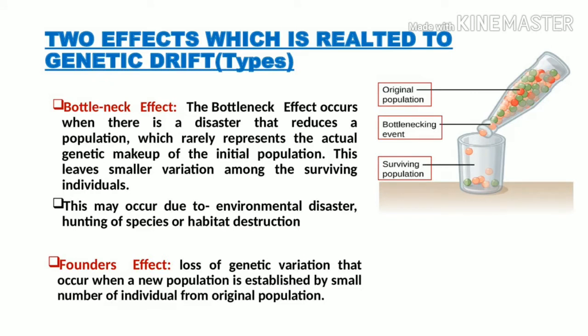There are two types of genetic drift — it may occur either by bottleneck effect or by founder's effect. The definition of founder's effect is: it is a loss of genetic variation that occurs when a small population is established by a small number of individuals from an original population. The most common example is a population of 10 people.